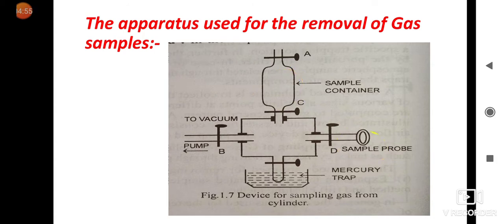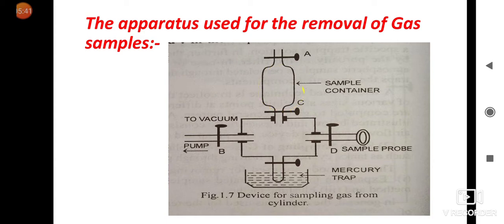This is the sample probe — it is made of a rubber tube, and it will be used to sample from the compressed cylinder or compressed gas. This is the vessel which consists of liquid mercury. It is used to store or trap excess gases coming through this sample probe. This is the vacuum valve, used to clean this sample container connected at part C. The valves are very tightly fitted into this device.